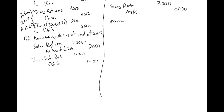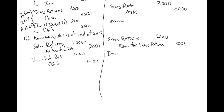On the credit sales side, it's similar but with some differences. We still have sales returns for $2,000, but the credit here is allowance for sales returns rather than refund liability. We also still have to account for the cost portion: inventory — estimated returns — for $1,400, which is 70%, and cost of goods sold for $1,400.